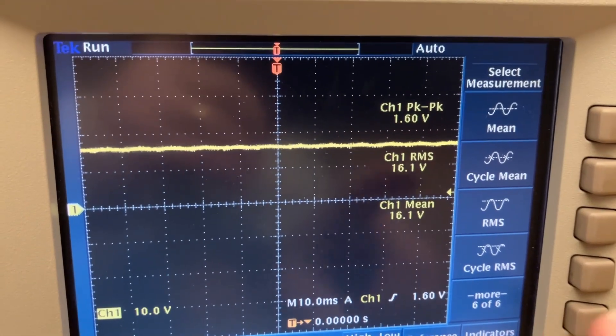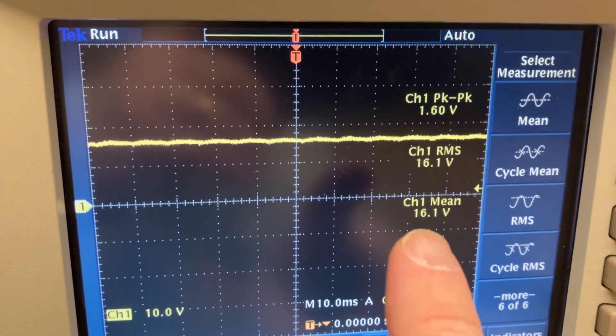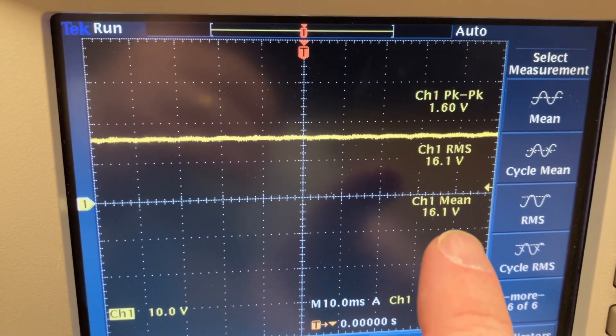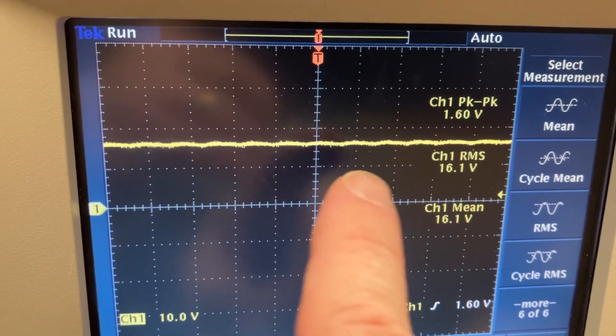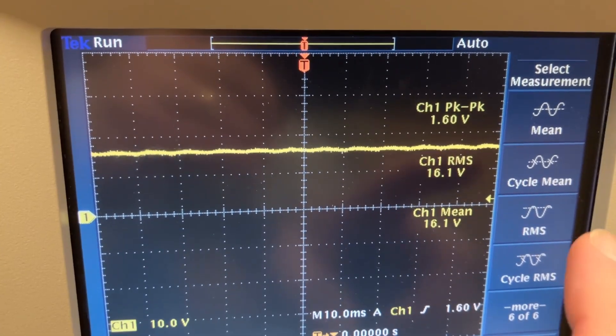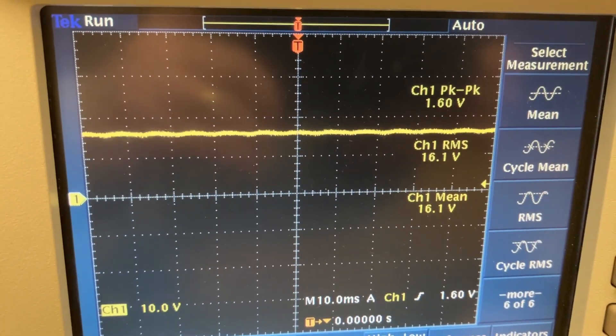Okay, so we're measuring the positive unregulated supply now. We've got 16 volts. I think this is supposed to be 18. We have a peak-to-peak measurement here of 1.6 volts. And maybe this capacitor could be working better. But now let's check the negative supply.